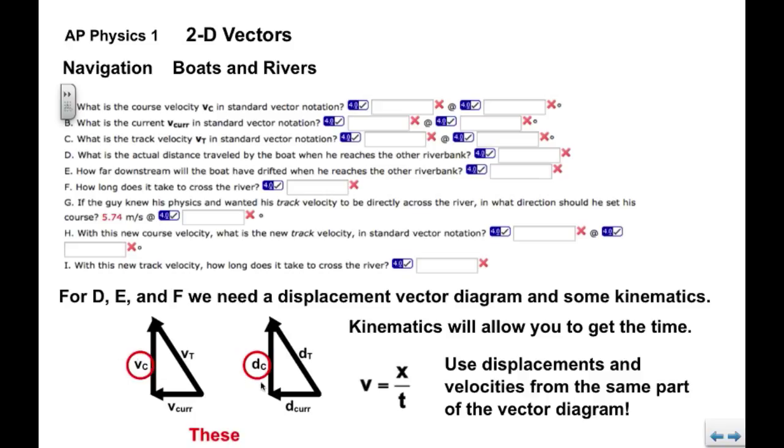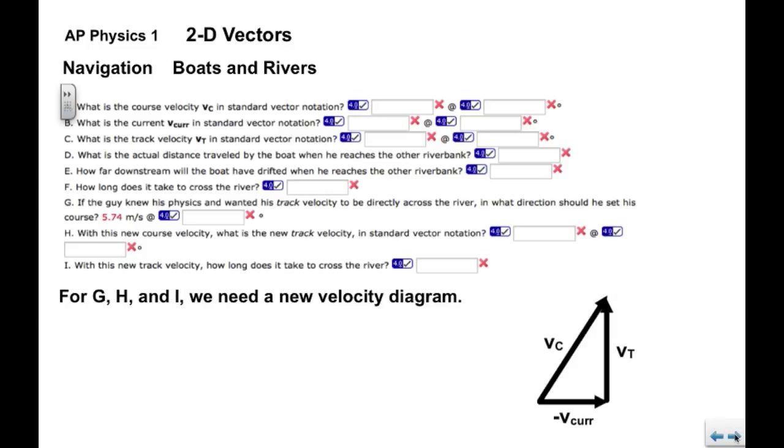If we're going to use position or displacement and time and velocity, we need to use the displacement associated with the course to solve for the time. We could conceivably use these two also, so we could use the track displacement and the track velocity, or we could use the downstream drift or the displacement associated with the current along with the velocity of the current. They would all generate the same time.